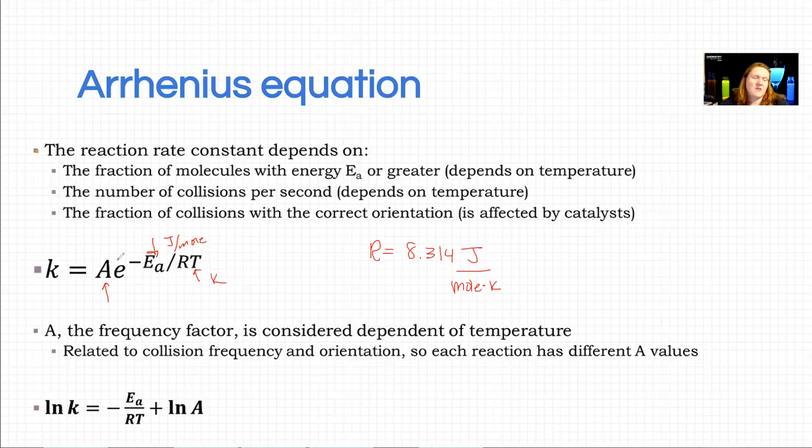You can use that y equals mx plus b. This is the same thing but natural log. Here your slope would be negative Ea over R. Your x is 1 over T. This is your intercept, and this is what you're plotting on the y axis. Your slope will be able to be used to find Ea, and your intercept can be used to find A.